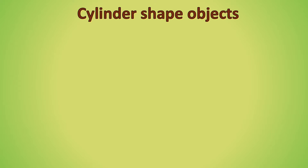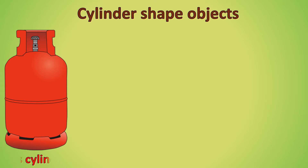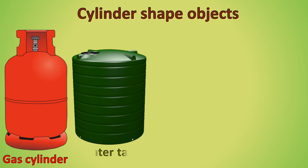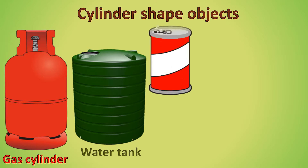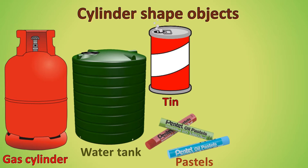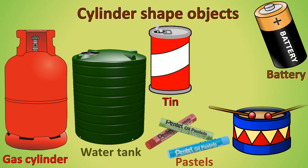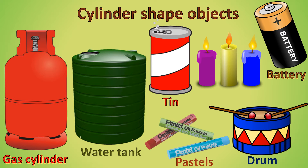Cylinder-shaped objects: Gas cylinder — look carefully, this portion is very similar to a cylinder. Water tank, tin, battery, drums, candles. All these are cylinder-shaped objects.